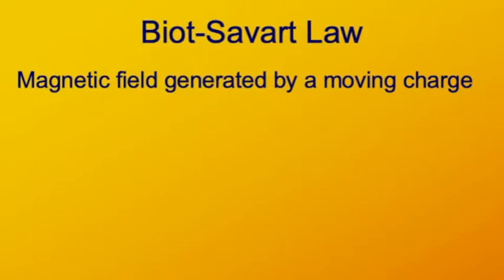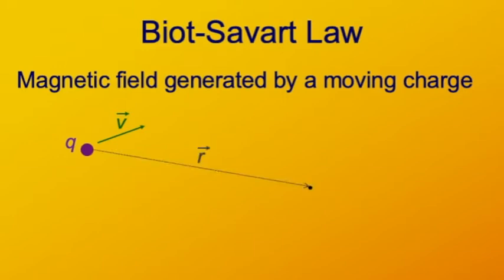For the origin of magnetic fields, I'd like to begin with the law of Biot-Savart. This provides a formula for the magnetic field created by a moving electric charge. An electric charge Q, moving with velocity V, creates a magnetic field. This formula tells us the magnitude and direction of this magnetic field at some displacement R from this charge.